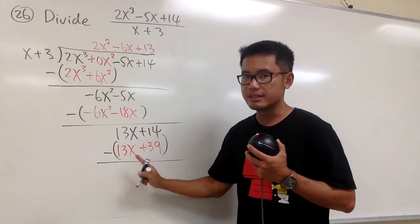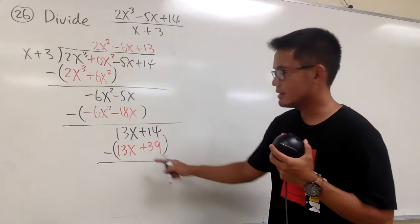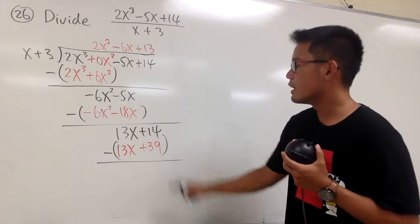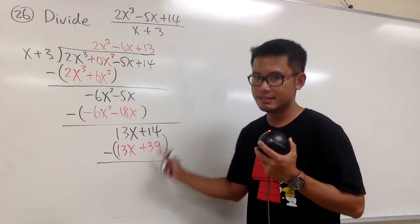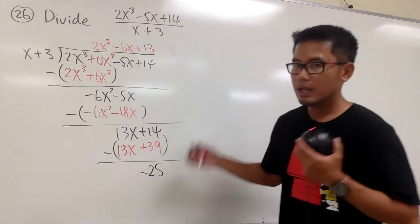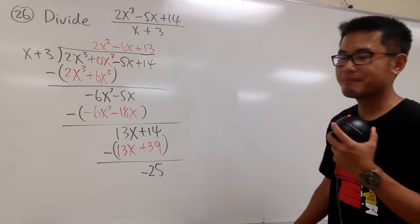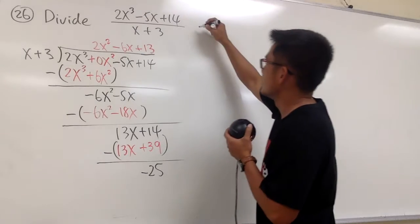13x minus 13x is zero. And then, 14 minus 39, right? This is a minus positive 39. 14 minus 39 is negative 25. And we're done with all the work for long division at the end. This is how we will write down the answer. And we'll put down the answer right here.